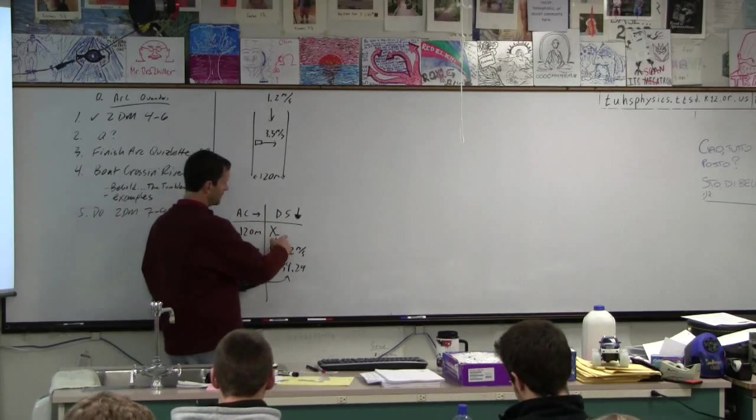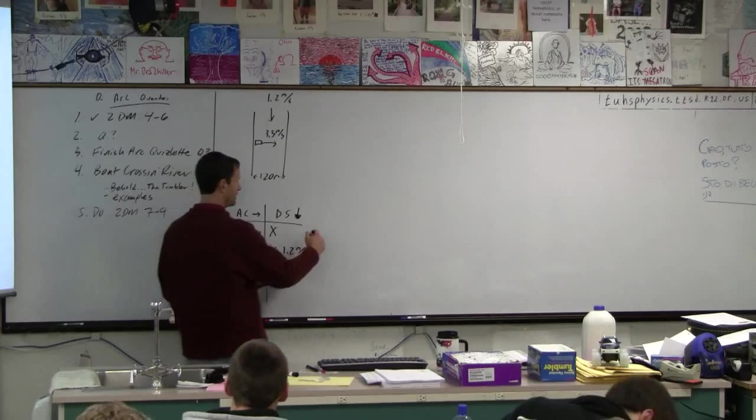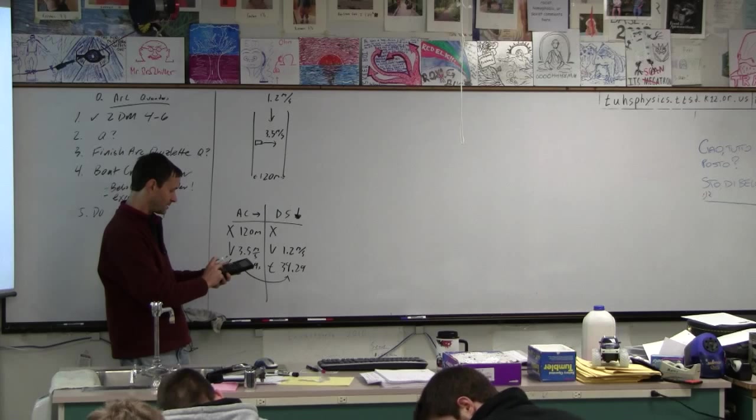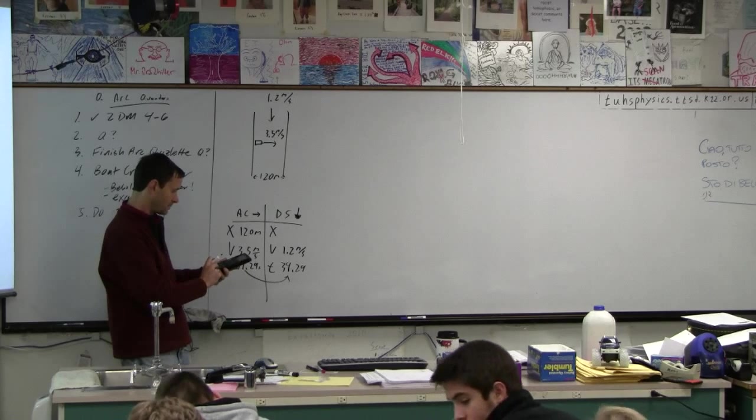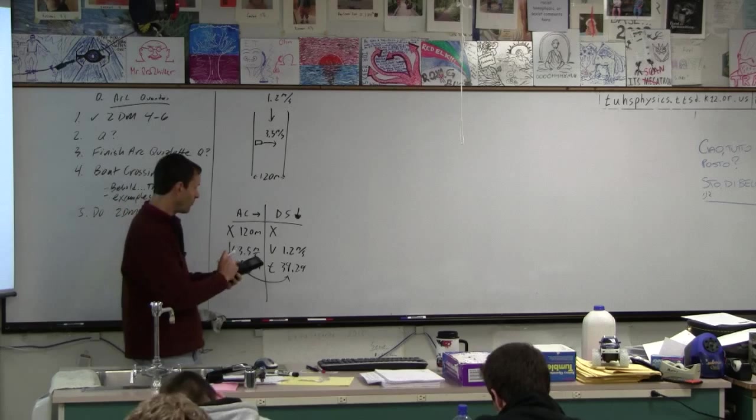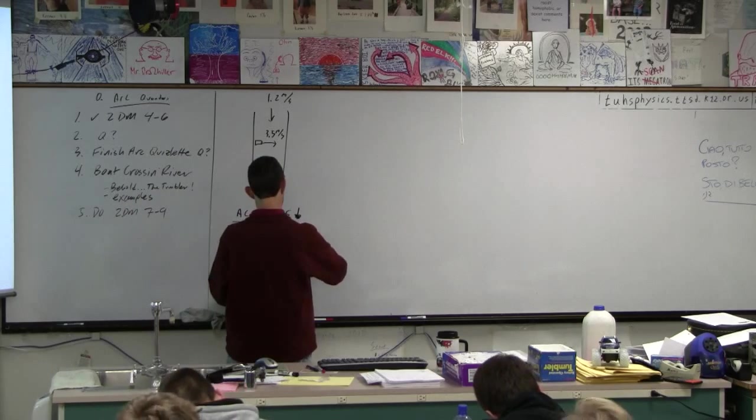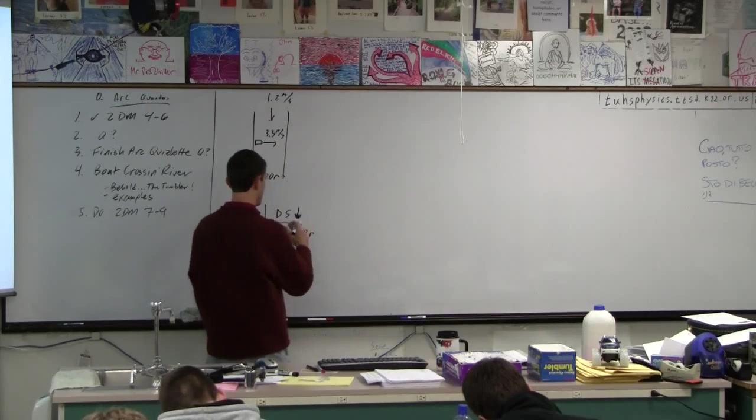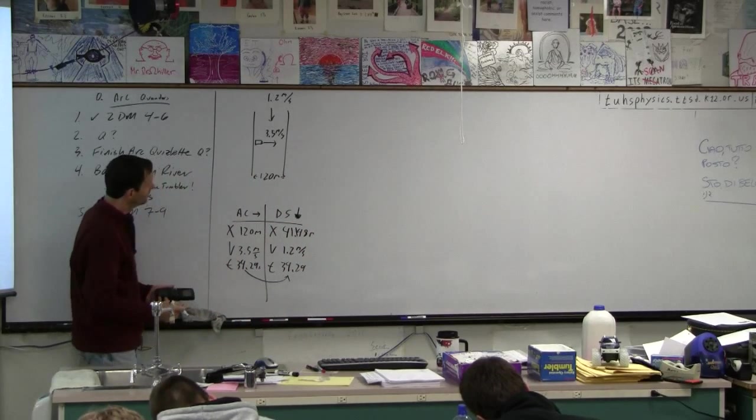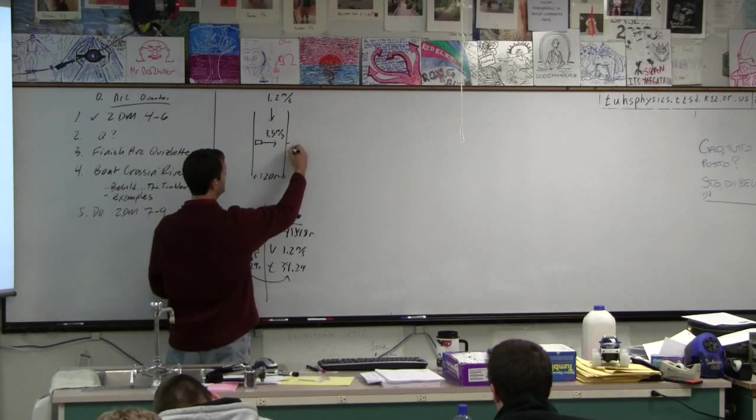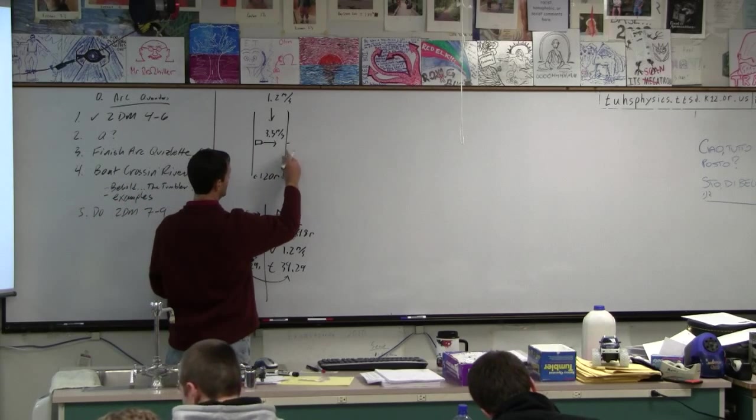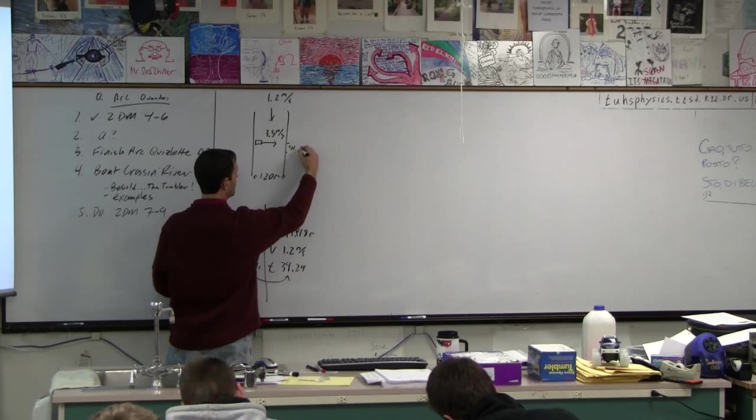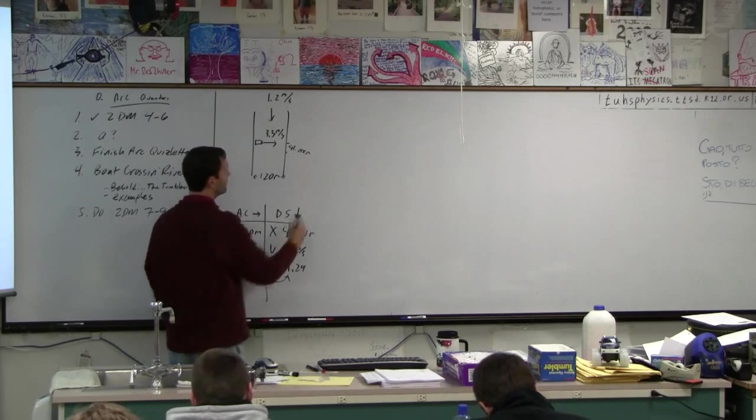And then, gee, what formula are we going to use here? Yeah, there we go. Just this times this is this, right? So 1.2 times 41.48, 148 meters. So I guess 41.1 meters or so. Okay, so it's going to go, in the time it takes to cross this thing, it's going to go downstream. If this is 120, it's going to go about a third of that distance, 41.148 meters downstream.